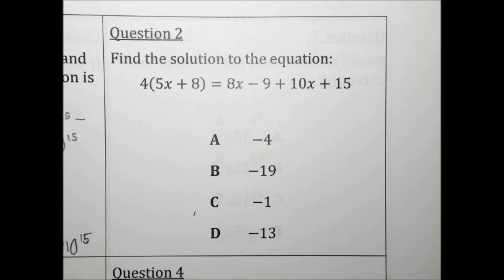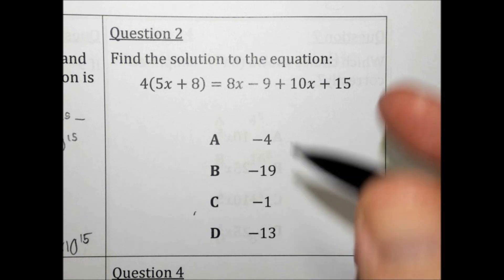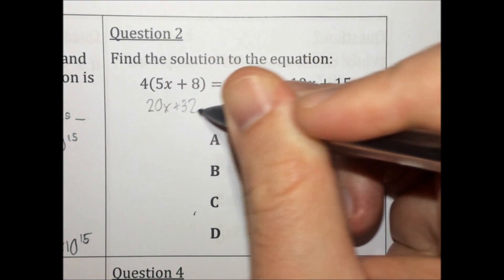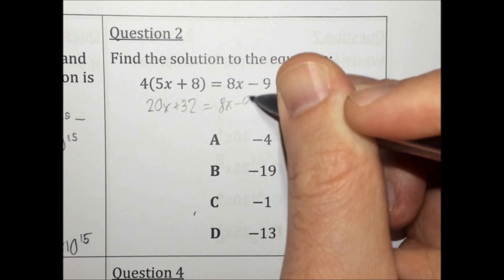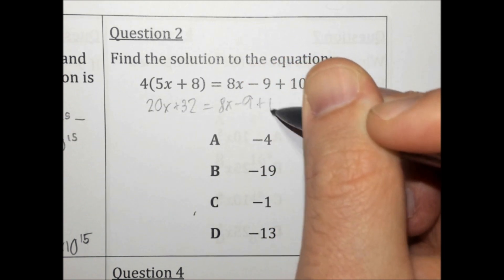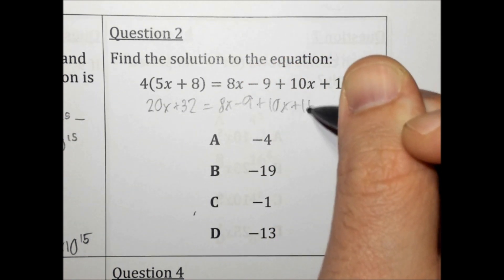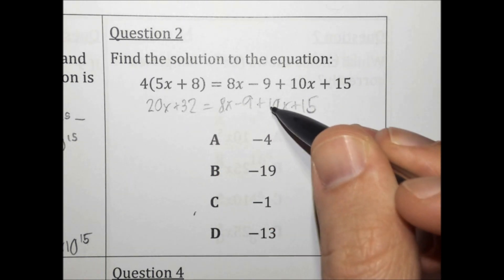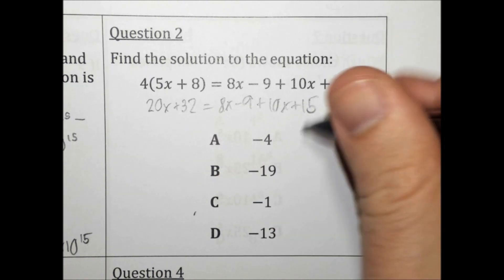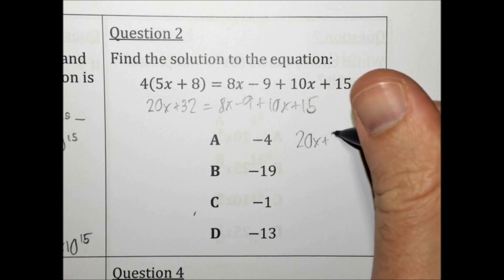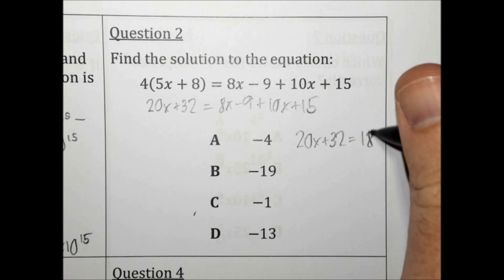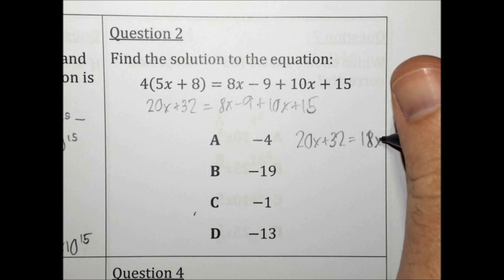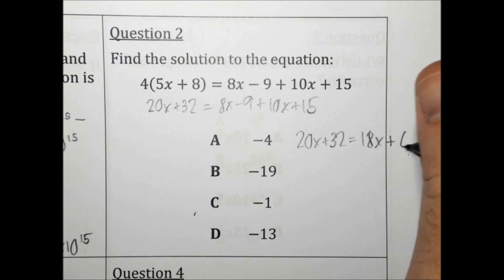Find the solution to the equation. First thing we need to do is distribute: 20x plus 32 equals 8x minus 9 plus 10x plus 15. Next thing we need to do is combine like terms. 8x plus 10x gives us 20x, so we get 20x plus 32 equals 18x. Negative 9 plus 15 is 6.